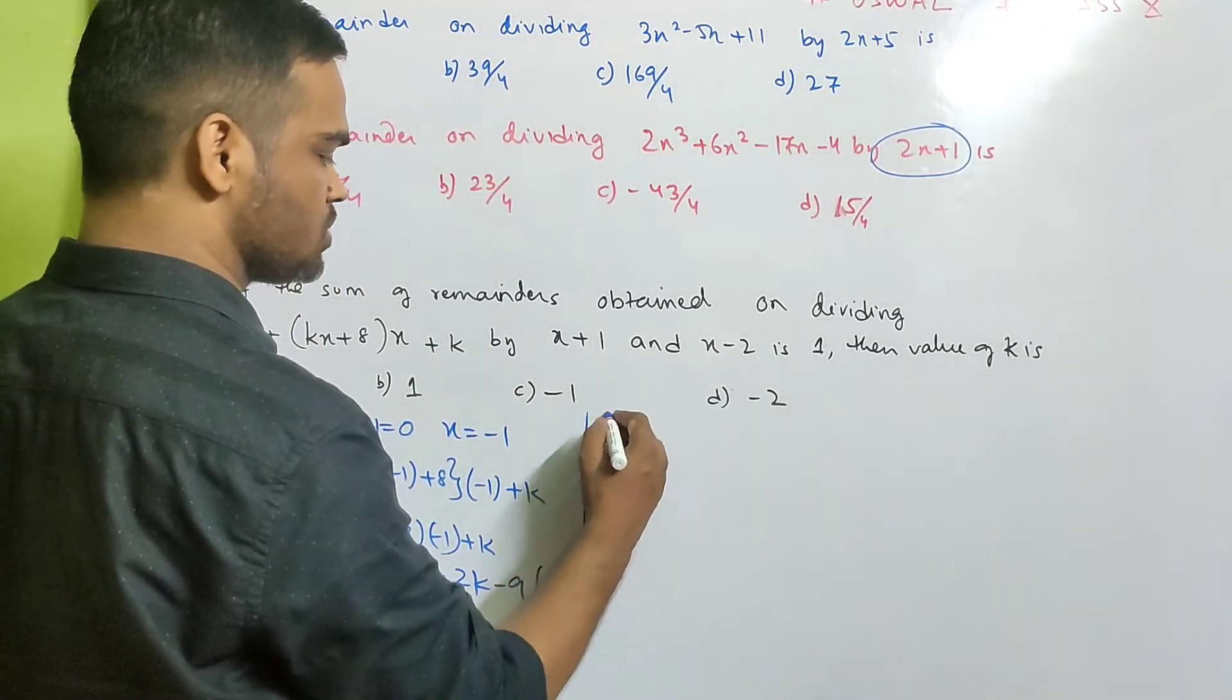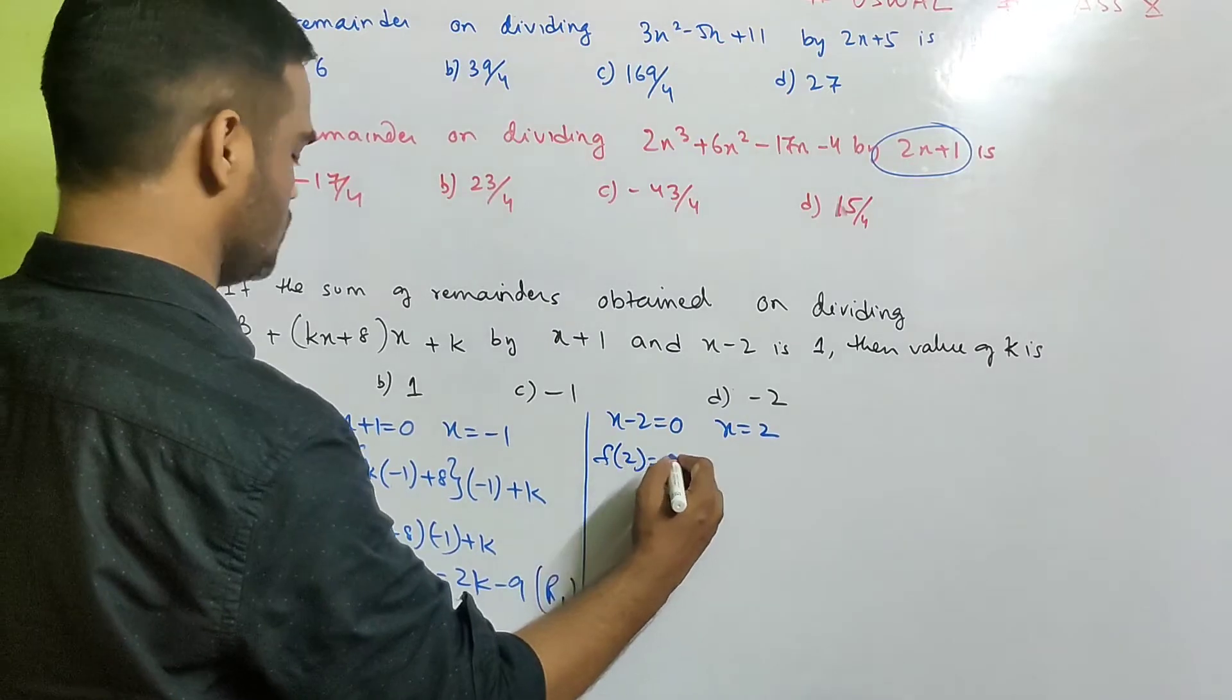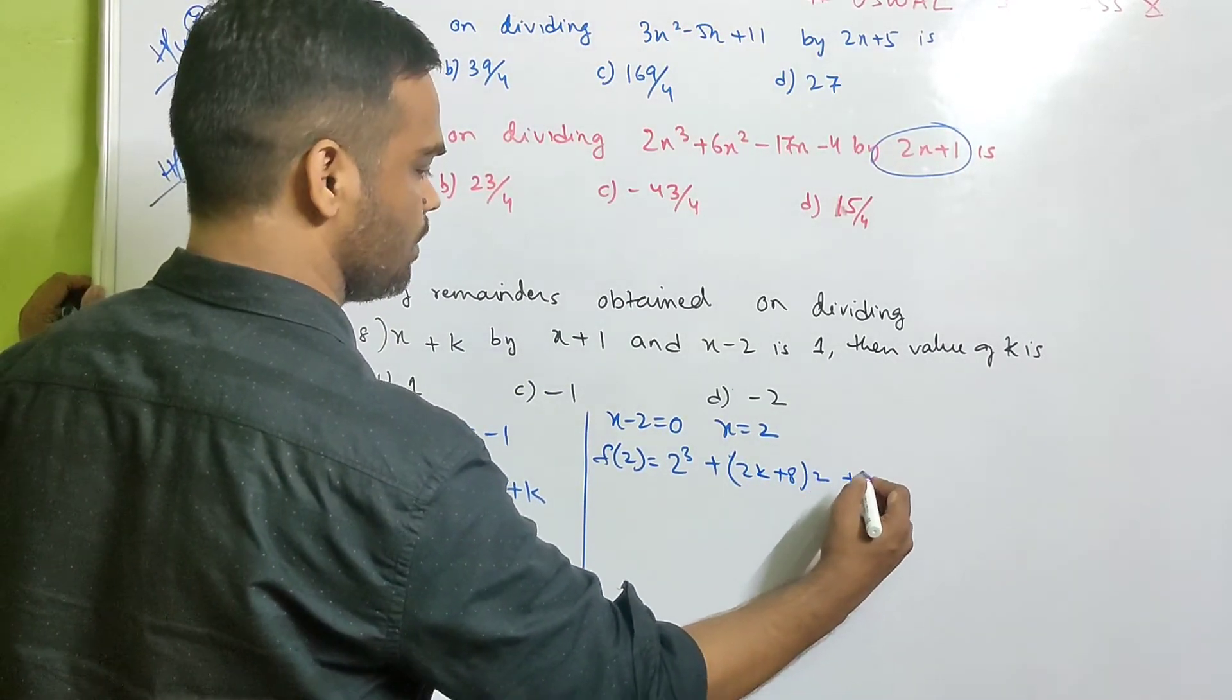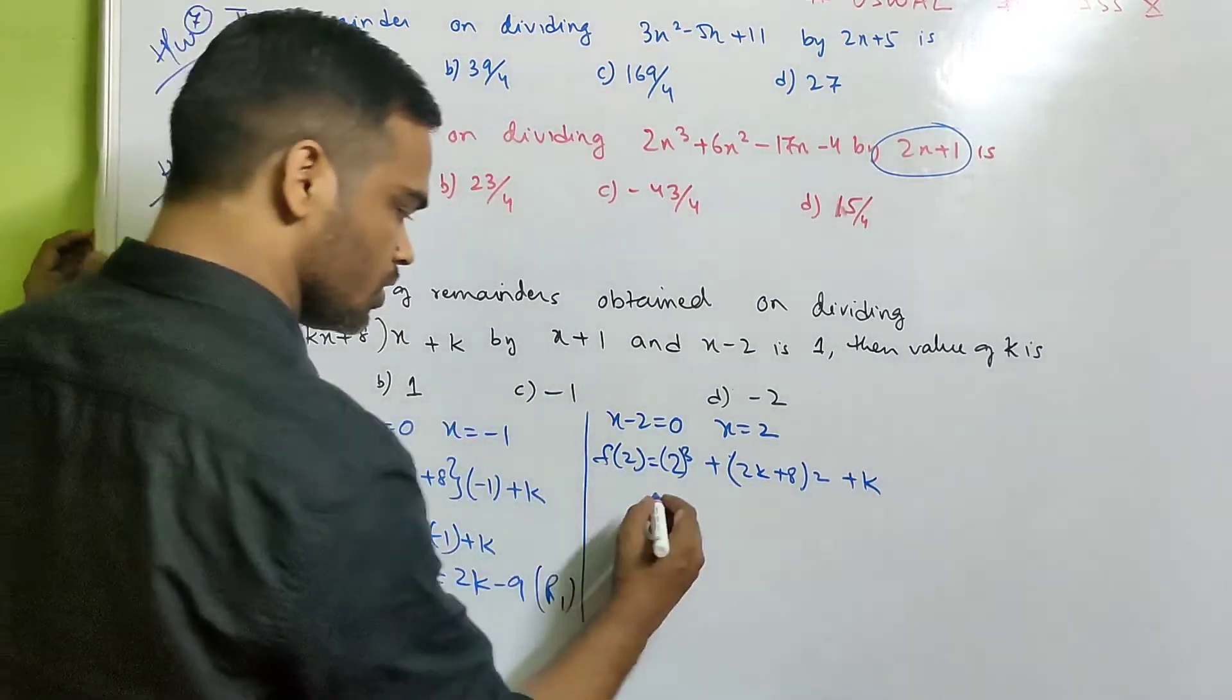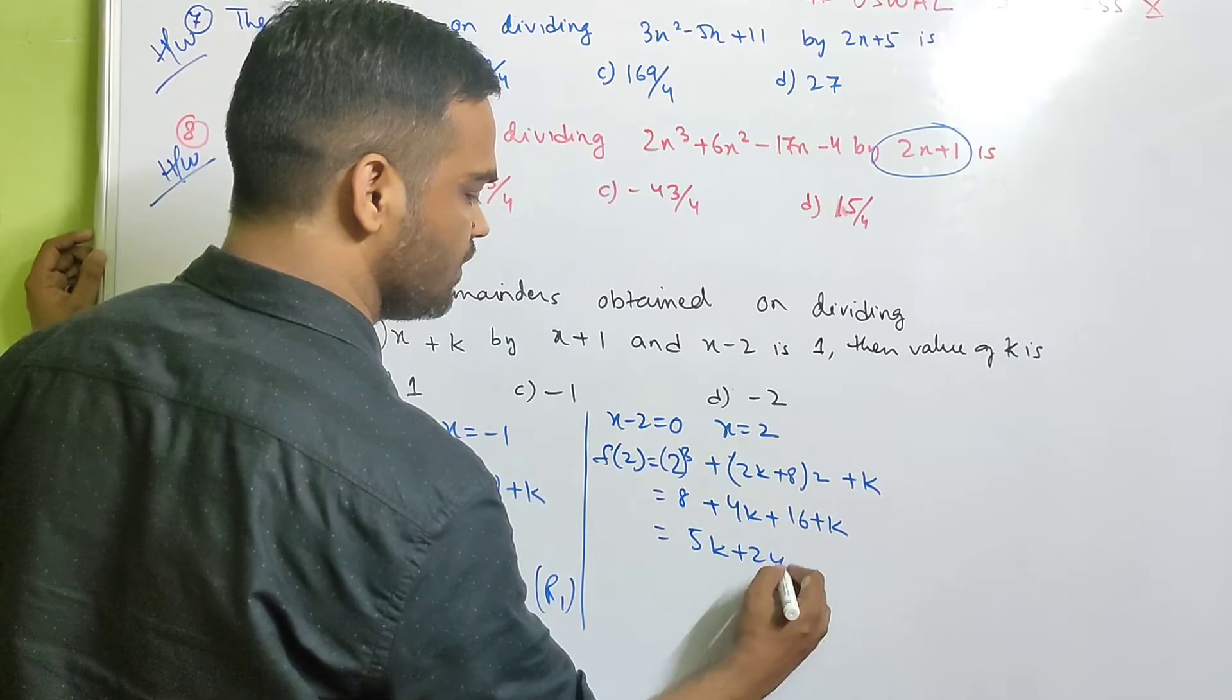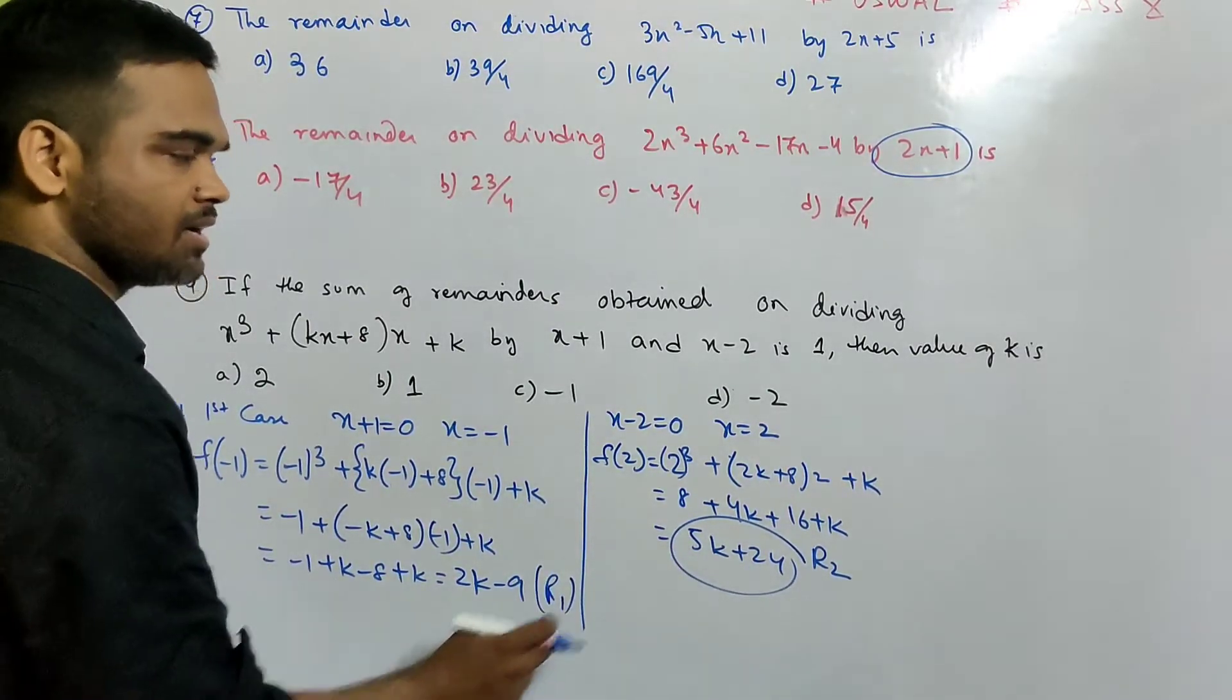Find remainder 2. So x minus 2. So x minus 2 equals to 0. So x equals to 2. So instead of x, I will put the value 2. So 2 cube plus k into 2 is 2k plus 8 times 2 plus k. Instead of x, I am putting 2. So this is your r2. So what happens? 8 plus 2 to 2 is 4k plus 16 plus k. That's 5k plus 24. This is your r2. Remainder 1, remainder 2.